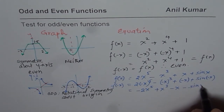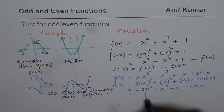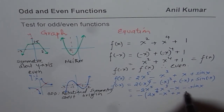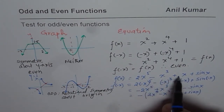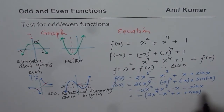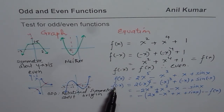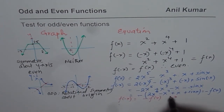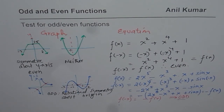We can take negative common from the expression and we get 2x to the power of 5 minus x cubed plus x plus sine x — which is exactly the same as f of x with a negative sign. So we can write this as minus f of x. Since f of minus x equals minus f of x, the function is an odd function.